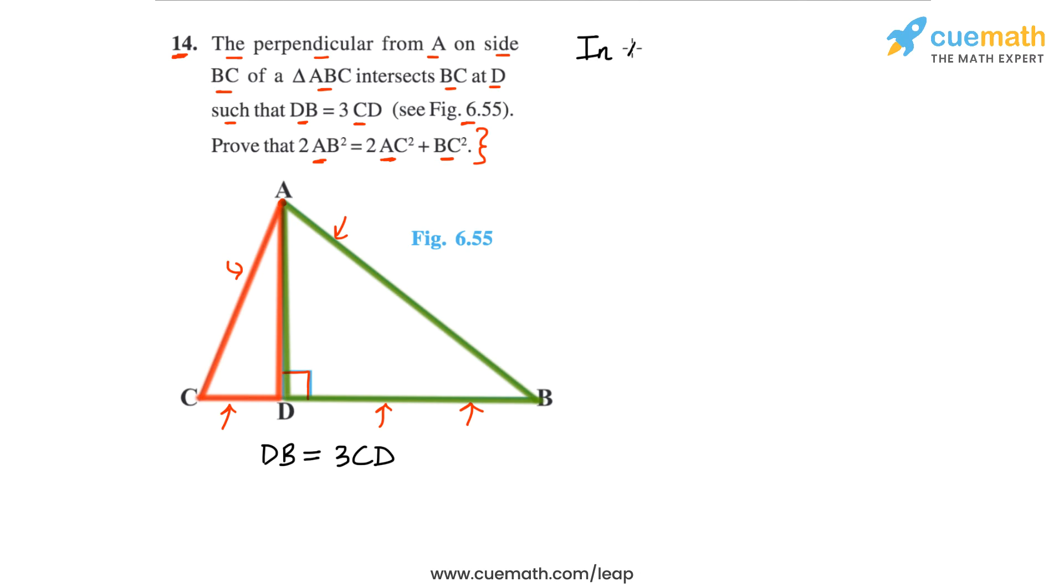In triangle ABD, what will we get if we apply the Pythagorean theorem? AB square, AB is the hypotenuse, so AB square will be equal to AD square plus BD square. This is what we will get from triangle ABD.